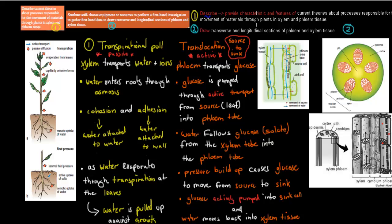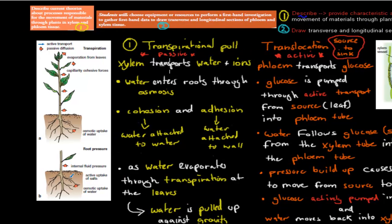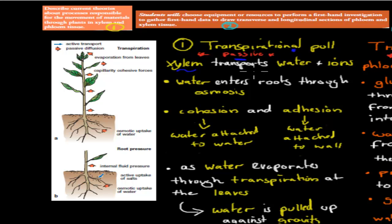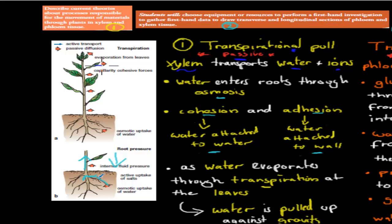The next dot point says 'describe' current theories about the process responsible for the movement of materials through plants in xylem and phloem. Xylem transports water and ions via transpirational pull — a passive process requiring no energy. Water enters the roots through osmosis, then cohesion (water molecules attached to each other) and adhesion (water molecules attached to the xylem wall) prevent it from dropping back down. At the leaves, transpiration — evaporation of water — causes water molecules to leave, and cohesion pulls the remaining water upward from roots to leaves, moving water against gravity without energy.